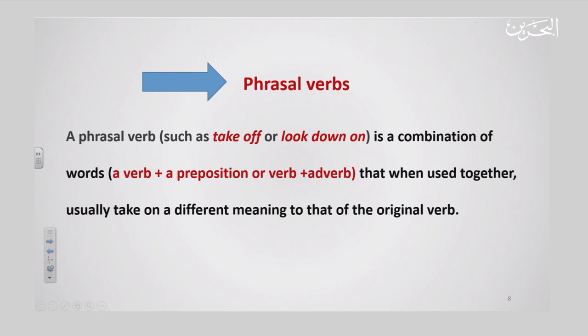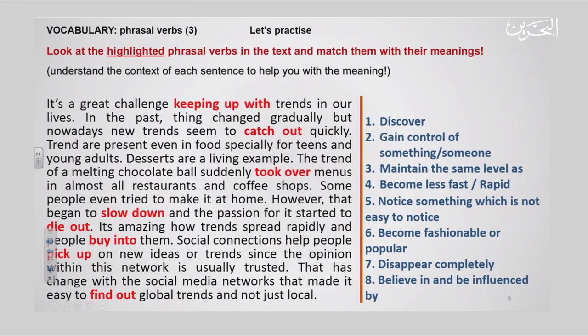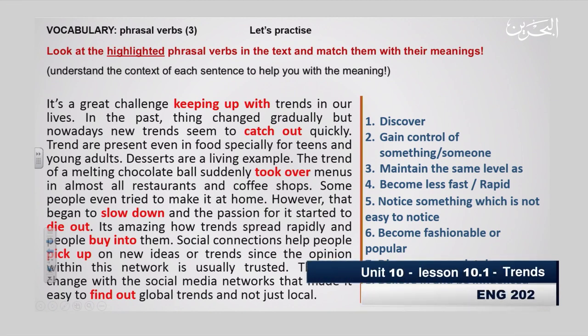What are phrasal verbs? Phrasal verbs are groups of words that consist of a verb and a preposition, or a verb and an adverb. When combined together, this group of words forms a new meaning, but when they are individual, the meaning is different. Now we will try to understand the meaning of the phrasal verbs in the presented text: keeping up with, catch on, talk over, slow down, die out, buy into, pick up, and find out.